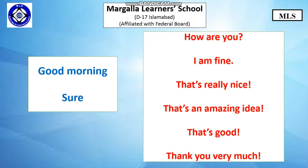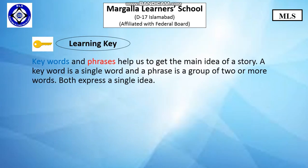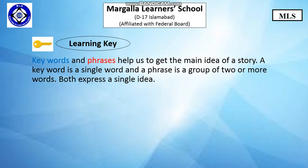The highlighted words in blue are keywords and the ones in red are phrases. These help us to get the main idea of a story, and these are used when we meet or talk to someone. A keyword is a single word, and a phrase is a group of two or more words. They both express a single idea.